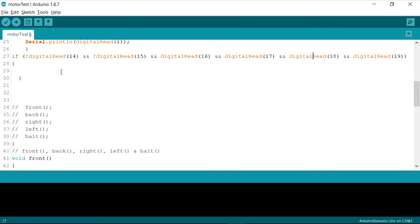So if digital read 14 is 0, means not digital read 14, and digital read 15 must be 0, digital read 16 and 17 must be 1, and digital read 18 and 19 must be 0. So this is how you identify whether forward direction has been attained or not. If this condition is attained, then what we are supposed to do is simply call a function called front, which we already defined in our earlier video.